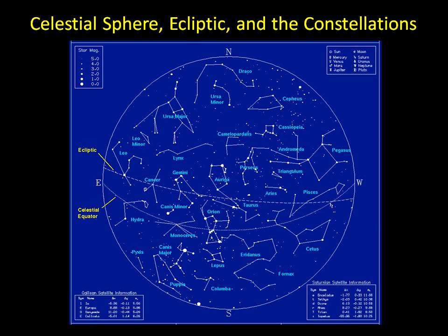Hi class, this is a short video on the celestial sphere, the ecliptic, and the constellations. This is material contained in chapter 2 of our textbook and this is a pretty quick treatment of it. It's not comprehensive so make sure to read this chapter at least once.